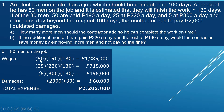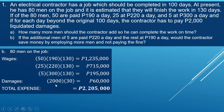For the wage of 50 men at 190 pesos a day times 130 days, that is 1,235,000 pesos. For 25 men at a wage of 300 pesos a day times 130 days, that is 195,000 pesos. For damages, since there are 30 days in excess of the contracted 100 days, we pay 2,000 pesos per day. So 2,000 times 30 equals 60,000 pesos.